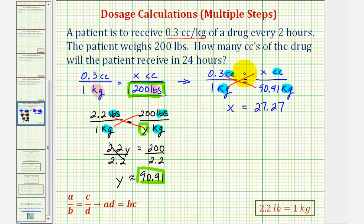Which means the patient that weighs 200 pounds should receive 27.27 cc's every 2 hours, which leads us to the last proportion that we have to solve. The patient is going to receive 27.27 cc's per 2 hours. We want to know how many cc's the patient will receive over 24 hours. So this rate would be equal to an unknown number of cc's. Let's call it z cc's to 24 hours.